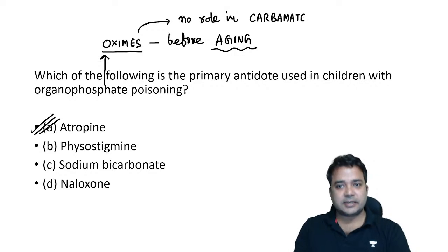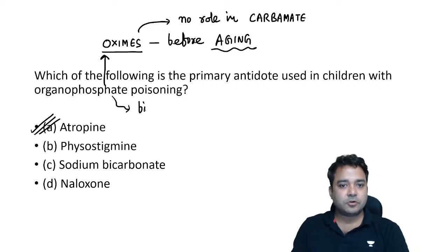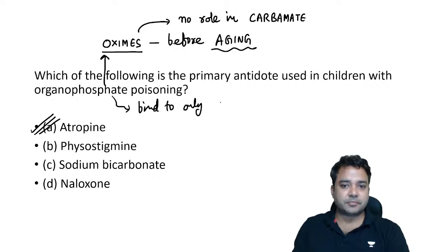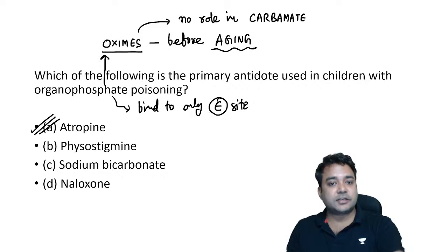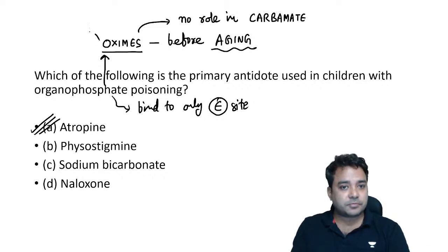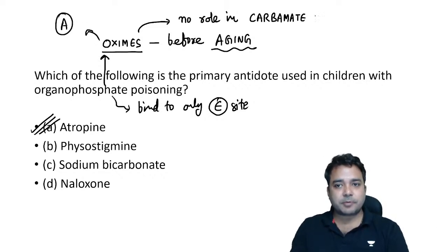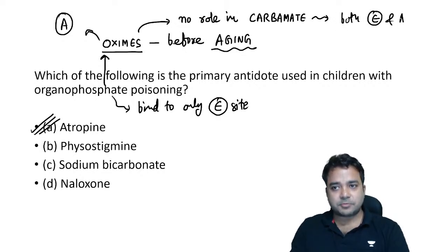The reason oximes work in OPC poisoning: OPCs bind only to the steric site of the enzyme, leaving the anionic site free — and oximes bind to the anionic site. But in carbamate poisoning, both the anionic and steric sites are utilized by carbamates, so oximes have no role there.